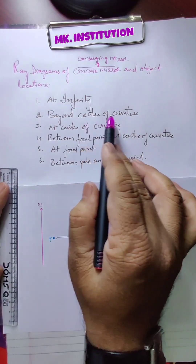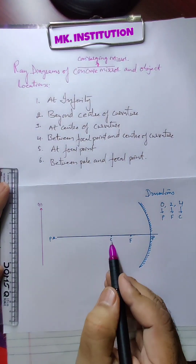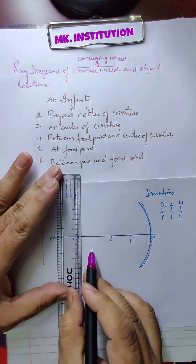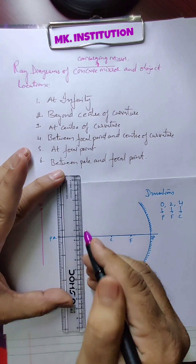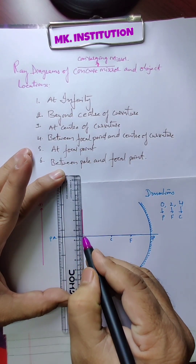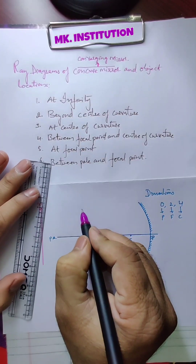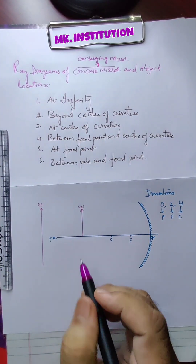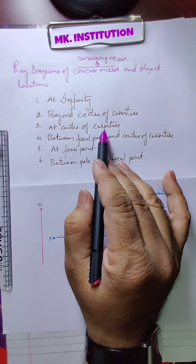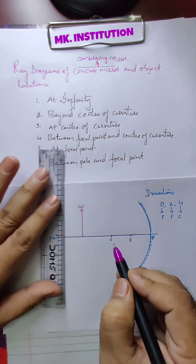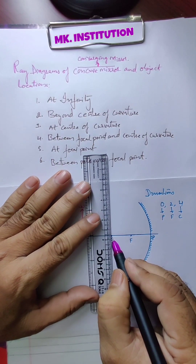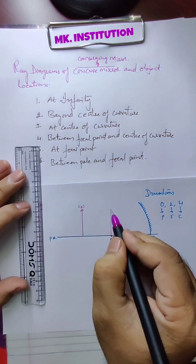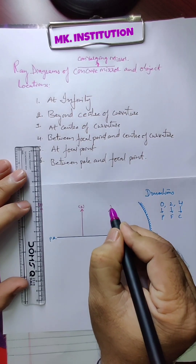Then what is the second one? Beyond center of curvature. This is the center of curvature, so beyond center of curvature — here you can draw. Beyond center of curvature, this is the second situation, the second location. Third one: it is center of curvature — here itself, center of curvature. It is the third one.